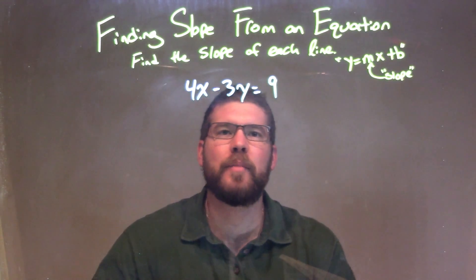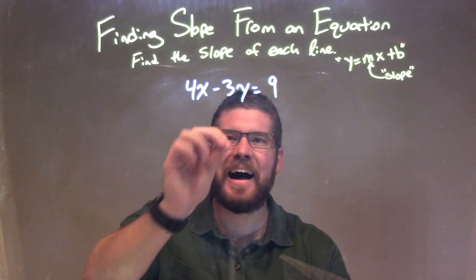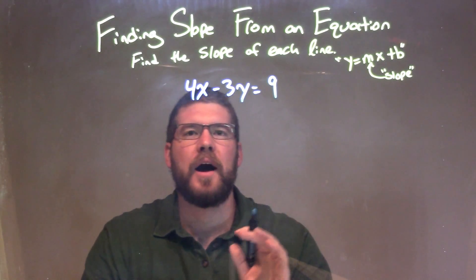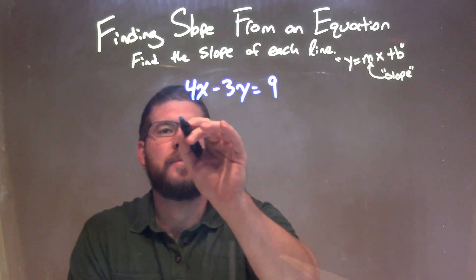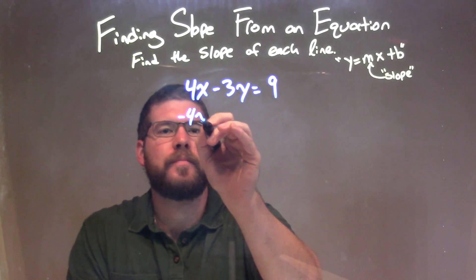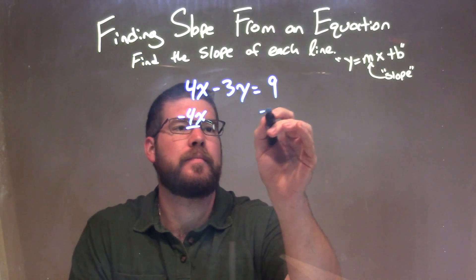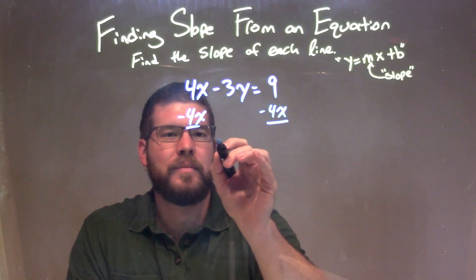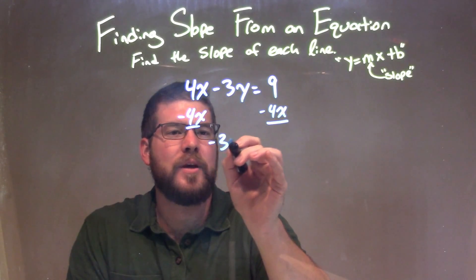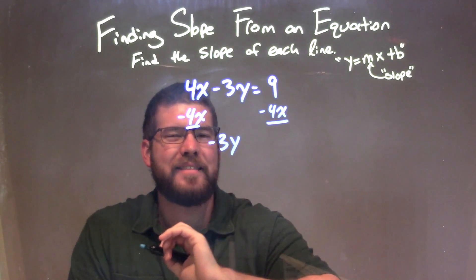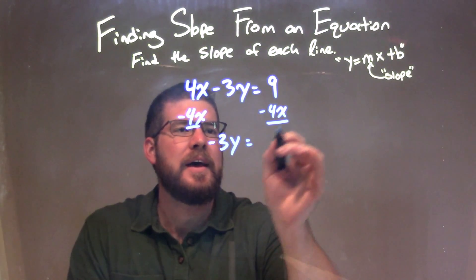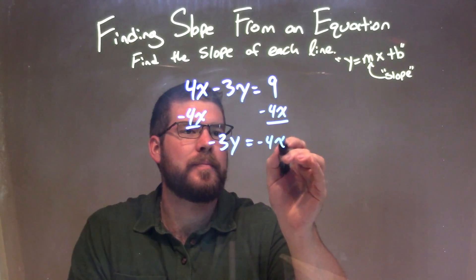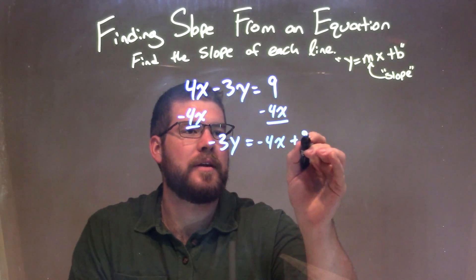So if 4x minus 3y is equal to 9, I need to isolate the y. To isolate the y, I subtract 4x from both sides. When I subtract 4x from both sides, I'm left with negative 3y by itself on the left, equal to negative 4x plus 9.